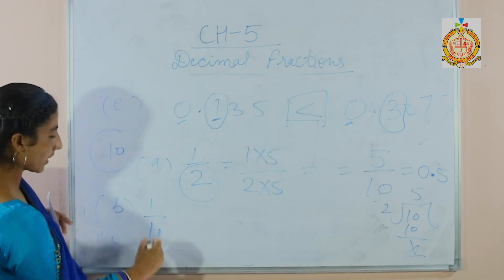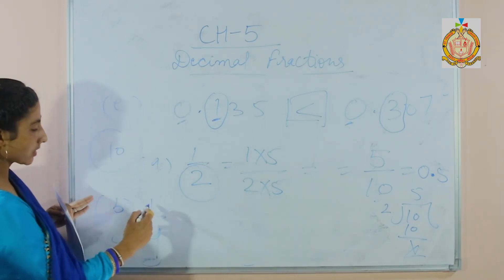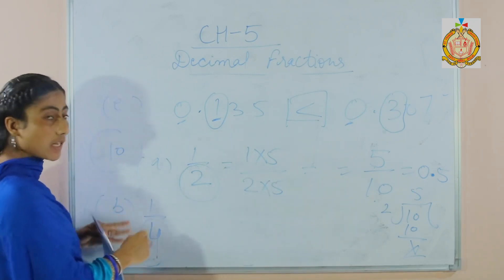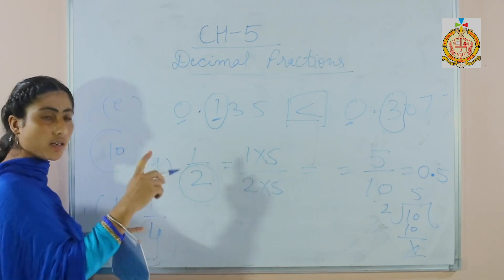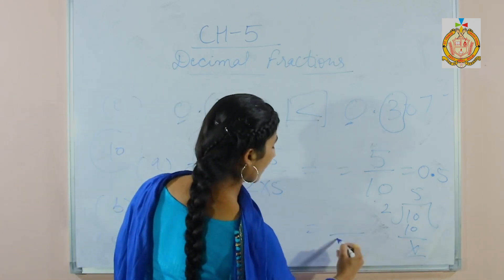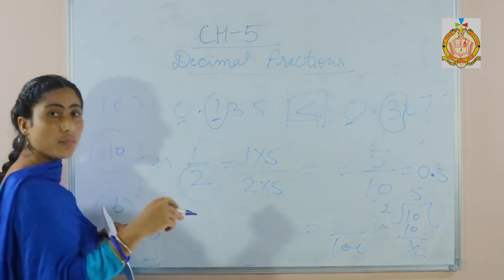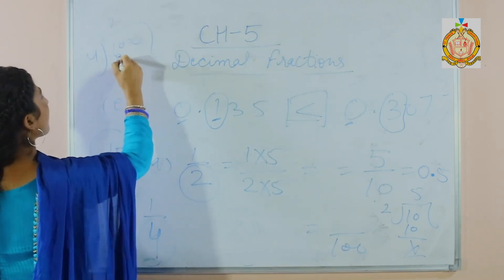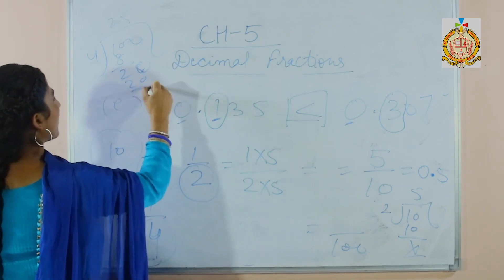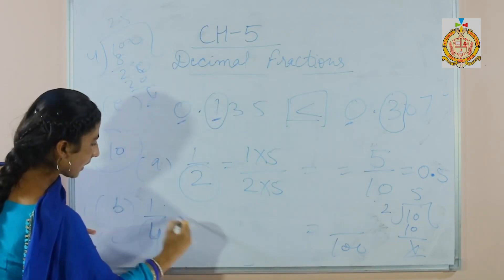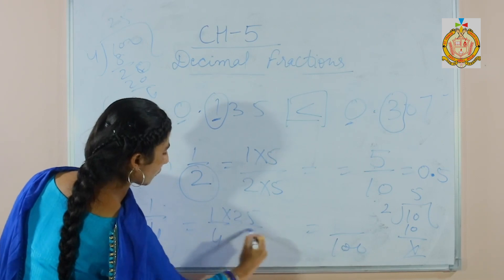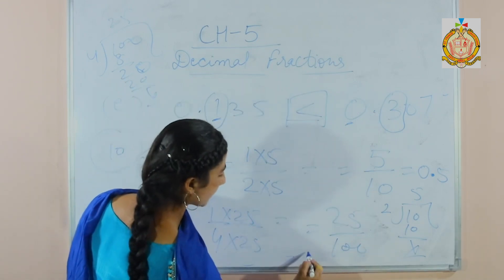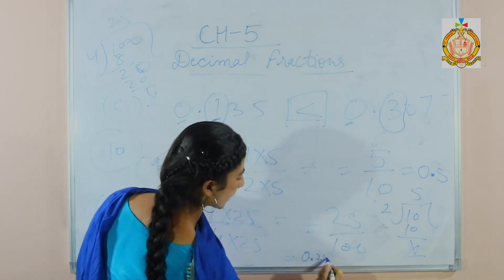Now 1 by 4. You cannot change this 4 into 10 because 10 doesn't appear in the 4 times table. But 100 does appear in the 4 times table. So 100 will be on the denominator. Divide 100 by 4 — you will get 25. So multiply numerator and denominator by 25. You get 25 over 100, which becomes 0.25.